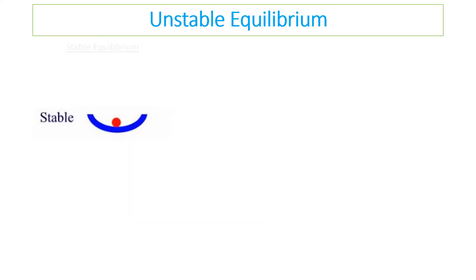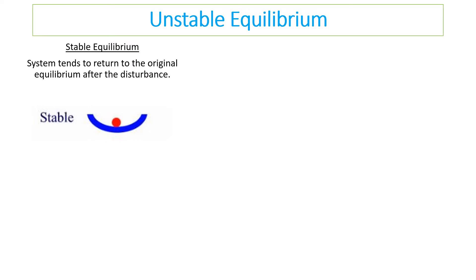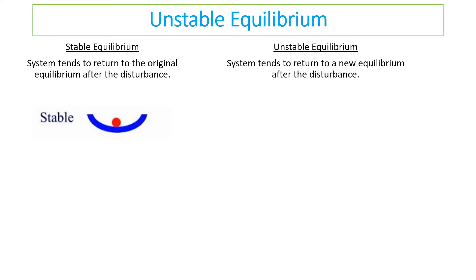Since matter and energy are constantly added or removed in living systems, we look at stable and unstable equilibrium. Stable equilibrium is when a system tends to return to the original equilibrium after a disturbance — like a ball pushed up the side of a slope that rolls back down when released. Unstable equilibrium is when a system moves to a new equilibrium after disturbance — like a ball on a peak that, once pushed, goes down and sets a new equilibrium position.